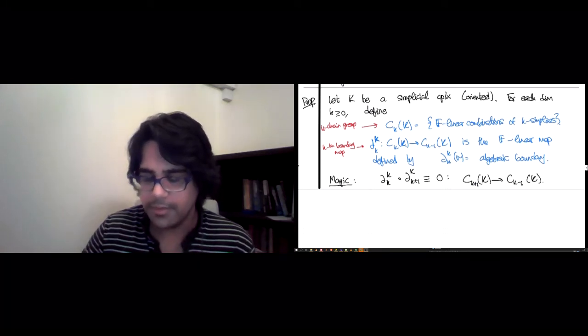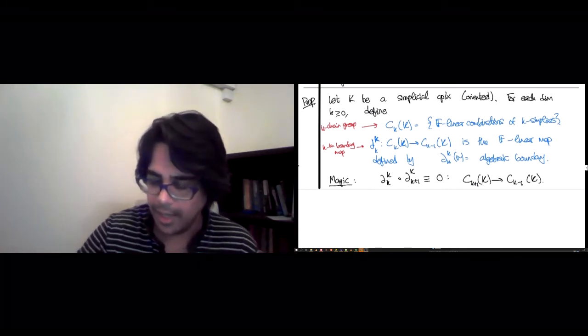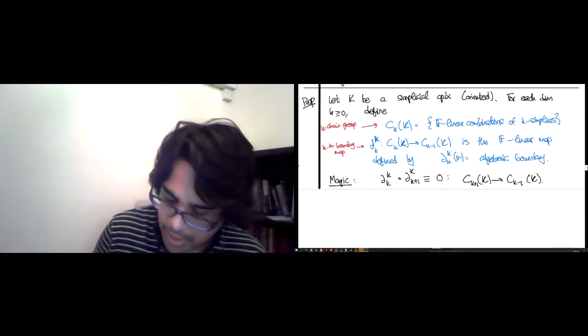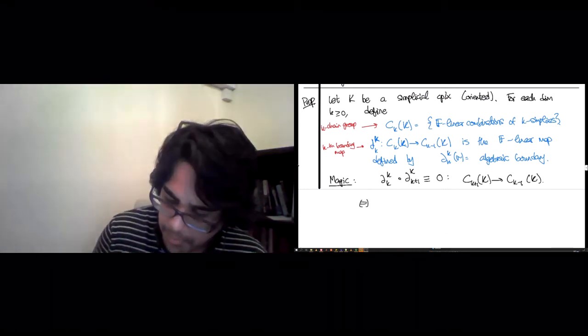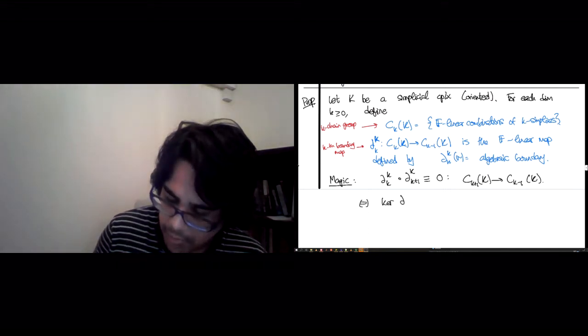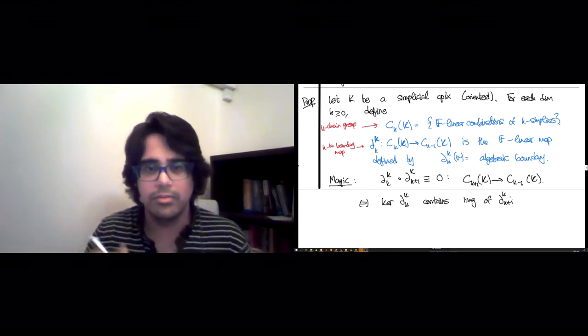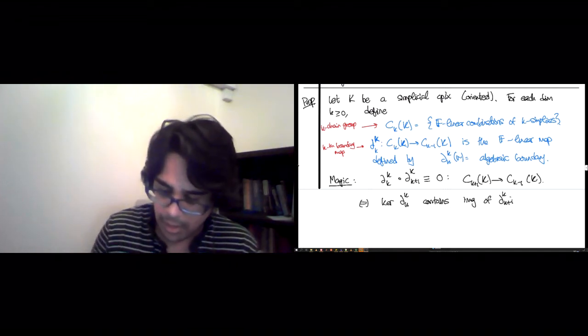There's an equivalent way of saying this del k composed with del k plus 1 gives you 0, which is to say that the kernel of del k contains the image of del k plus 1. There's no difference between those two statements.